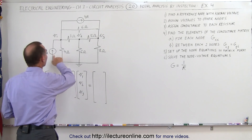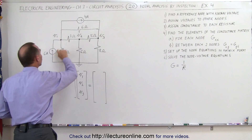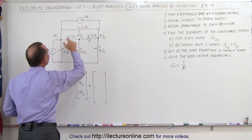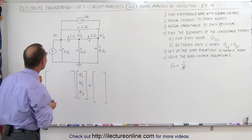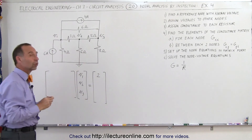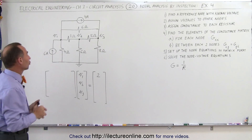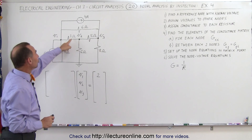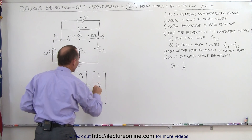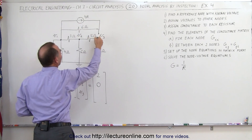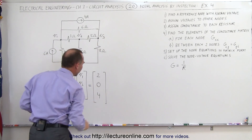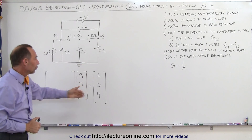What we do is look at all the current sources only — we don't worry about the currents in all the other branches. There are two sources. At the first node we have six amps entering and four amps leaving, that's a net of two amps entering that node: plus six, minus four — two amps net entering via current sources only. For the second node, there are no current sources directly connected, so we get zero current. And for the third node, we have four amps entering via this current source. That gives us the current matrix.